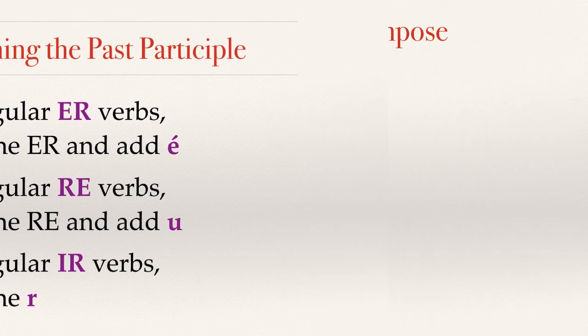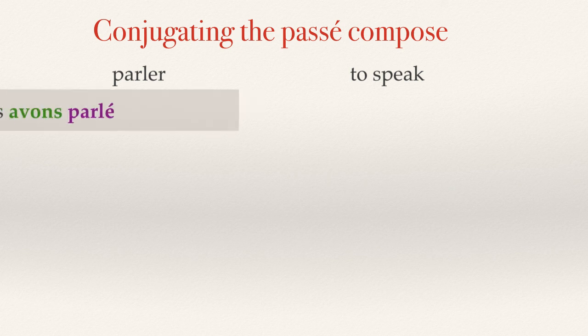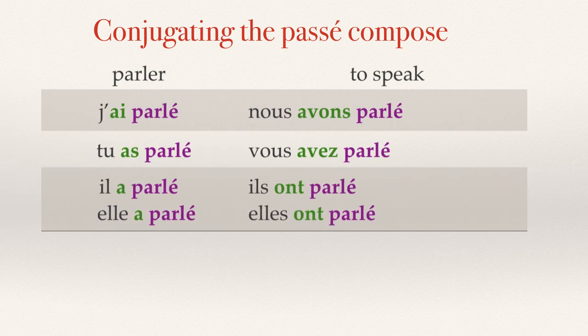So let's look at how we conjugate passé composé. We've got parler, to speak — a very basic ER verb we've done since the very beginning. As we conjugate it, notice that parlé, in purple, stays the same throughout the conjugation.